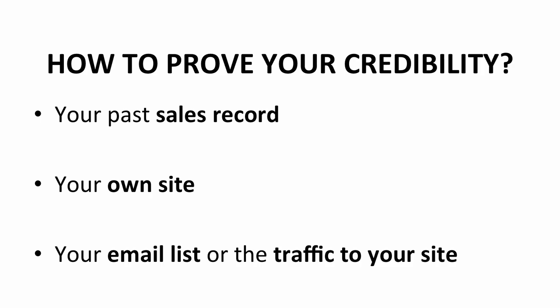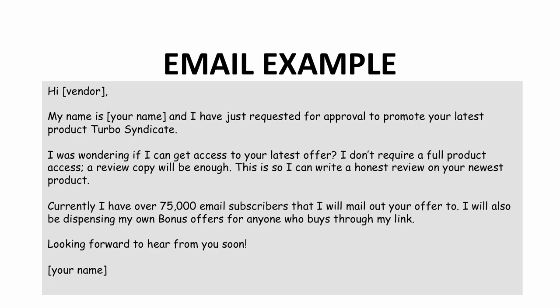You can easily convince the product vendor without hard selling about your credibility — let the numbers do the talking for you. Send a link that leads the product vendor to your own affiliate site and show the vendor how you're going to generate traffic to his site. Make sure you have the best sales letter in your affiliate link that's convincing. Lastly, reveal the size of your email list or the traffic to your site to the product vendor. Here is an email example for when you contact the product vendor for review access: introduce yourself and state the purpose of the email — straight to the point, no need for lengthy introductions. In this example, credibility is proved by the size of the email list.